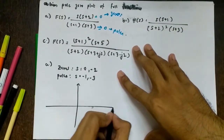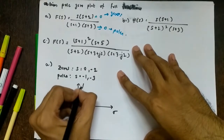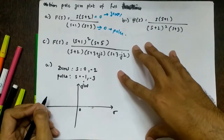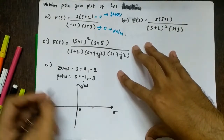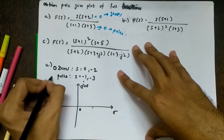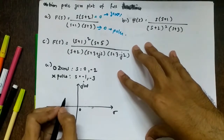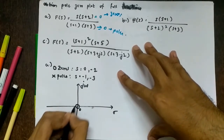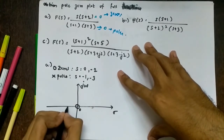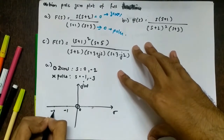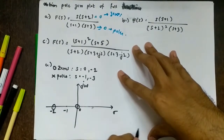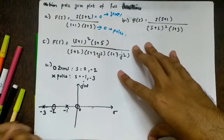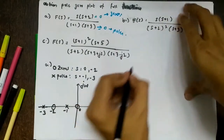Since s = σ + jω, we draw the σ–jω axis with the origin marked. Zeros are indicated by circles and poles by crosses — think of the game X and O. The zero is at the origin, another zero at −2, and the pole at −1 is marked with a cross; the other pole is at −3.